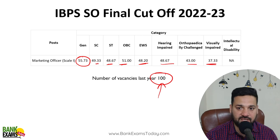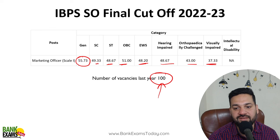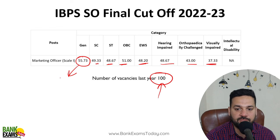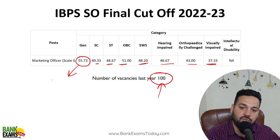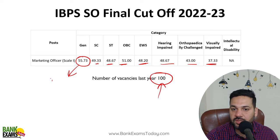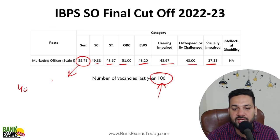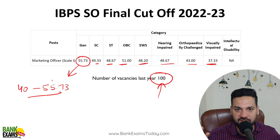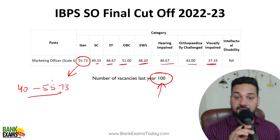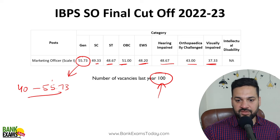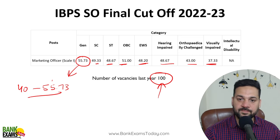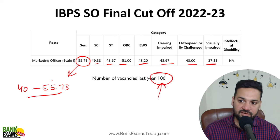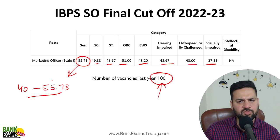So can we expect the cutoff to go below 40, given last year it was 55.73? No, because there are a lot of students in the range of 40 to 55. Most students fall in this range, and after 55, very few students are there.